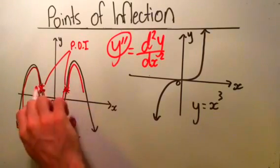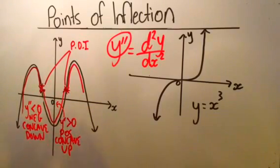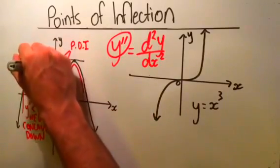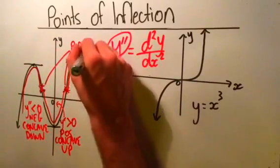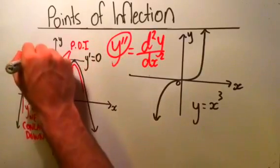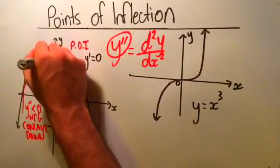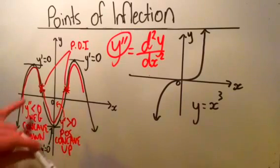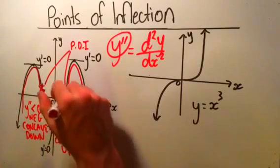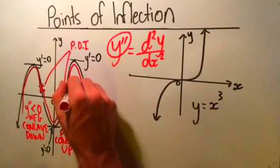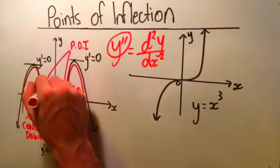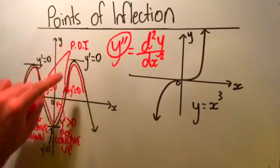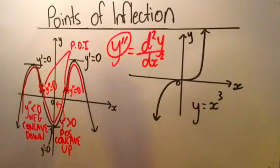Our points of inflection are where the concavity changes. Don't get them confused with turning points, which are where the first derivative equals zero. At turning points the first derivative equals zero, but at points of inflection the second derivative equals zero.